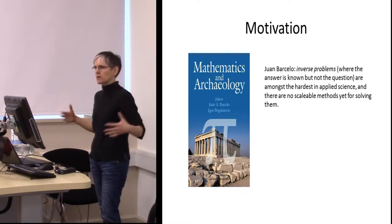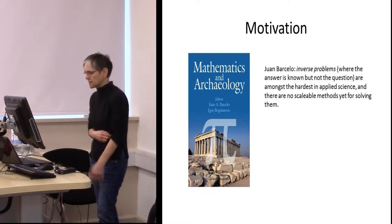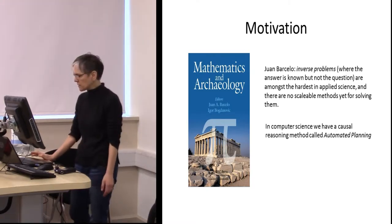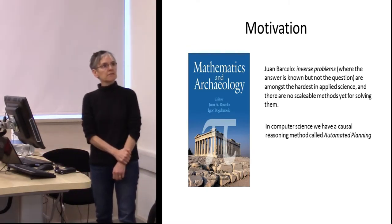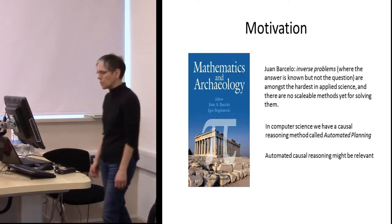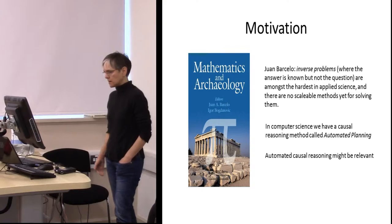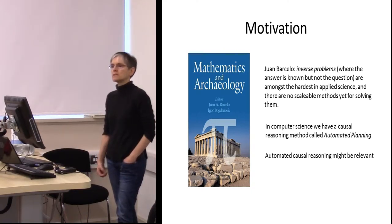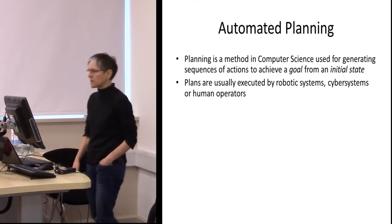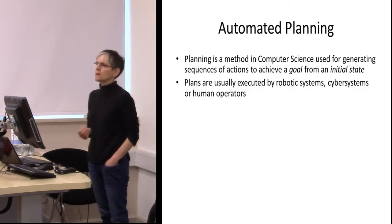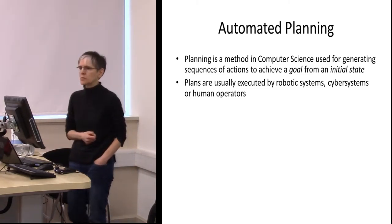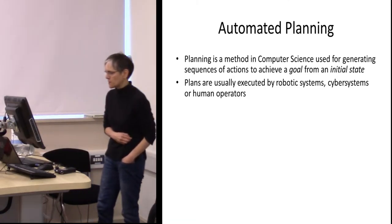Because as you reason back, everything branches and there are many different possible explanations for every detail. He says there are no scalable methods yet for solving these problems. In computer science we have a causal reasoning method called automated planning, which is where my research lies. I want to start by telling you what automated planning is, then give you a simple example from a computer game called Settlers, which is something simple and understandable.